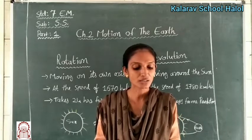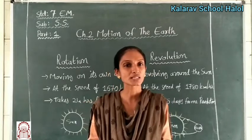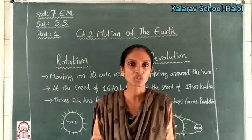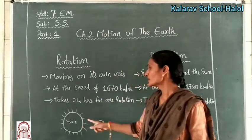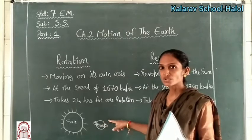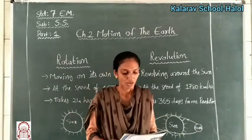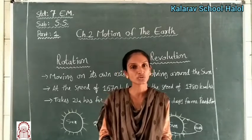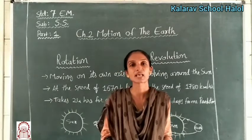Like other celestial bodies, the earth also moves in space. The other celestial bodies in the solar system move as well. The earth rotates on its axis and also revolves around the sun. In the picture, you can see the sun, and the earth rotating on its axis. The earth and the moon are constantly in motion.